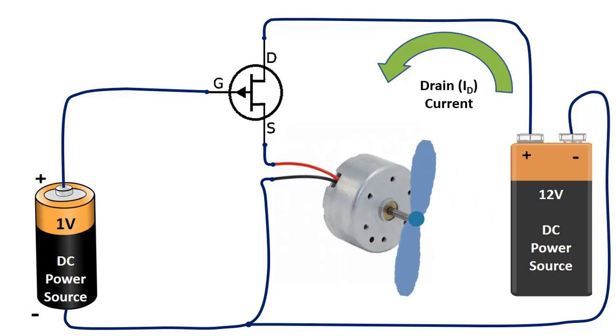Let's remove the 1V voltage source. When we remove the voltage source required for triggering, no current flows between drain and source.